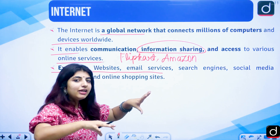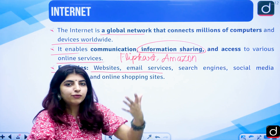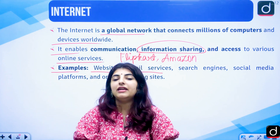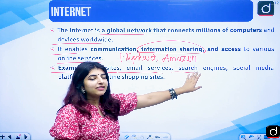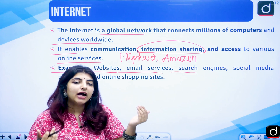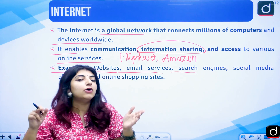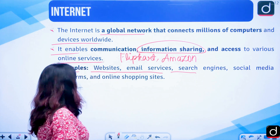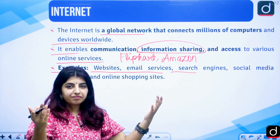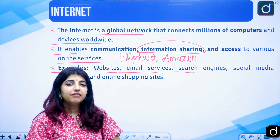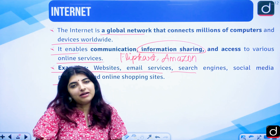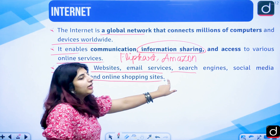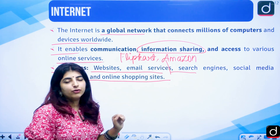Email services, search engines like Google and Yahoo where you search for information — you are using them with the help of internet. Social media platforms like Instagram and Facebook, and online shopping sites are all examples of internet-based services.